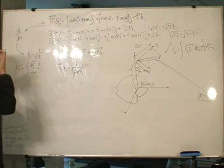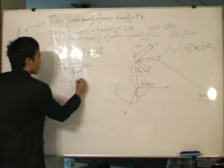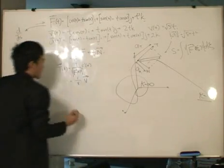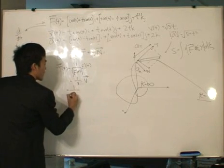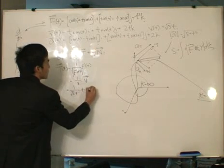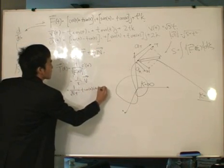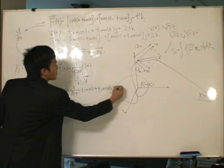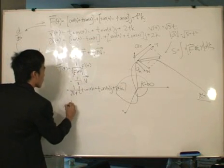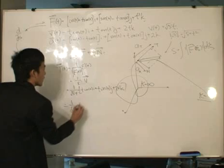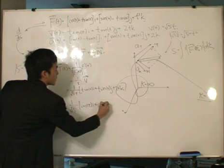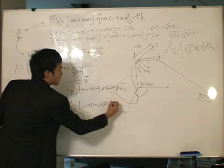This should be more of the simpler one because this is equal to 1 over v and the vector velocity vector, which we have over here and over there. So if I were to write it out formally, it's simply as root 5t times the velocity vector t cosine ti plus t sine tj plus 2tk, which we can bring up the t and divide it through by t. So it's 1 over root 5 and then cos ti plus sine tj plus 2k.